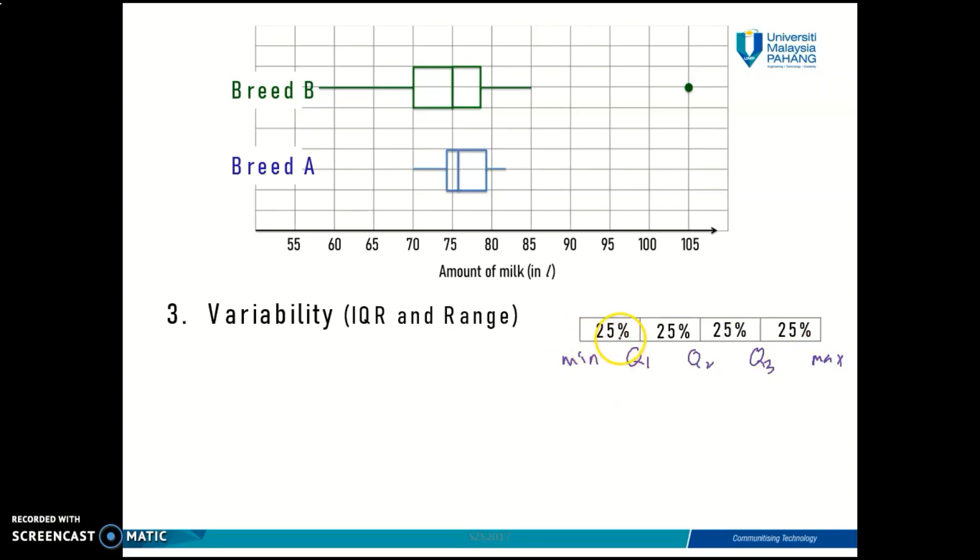From quartile one until quartile three, how many percent of the data is included in these two partitions? 50%, right? So from quartile one until quartile three is 50%.